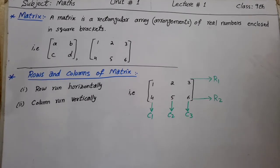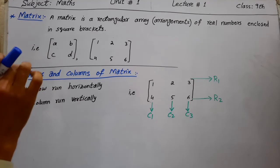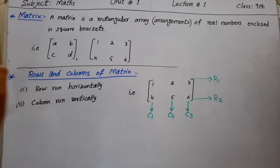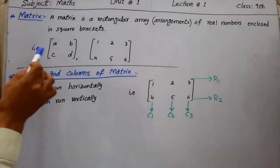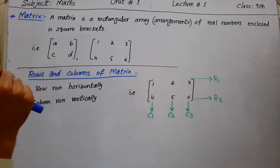A matrix is a rectangular array or arrangement of real numbers enclosed in square brackets. For example, [a b; c d] where a, b, c, d are elements enclosed in square brackets forming a matrix. Another example is [1 2 3; 4 5 6] with different elements in square brackets.